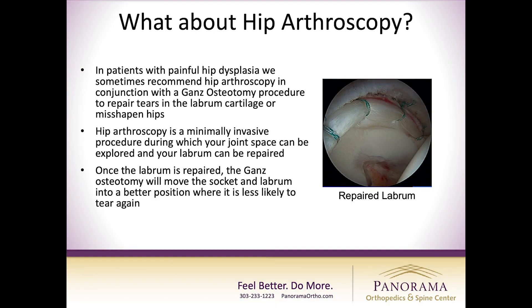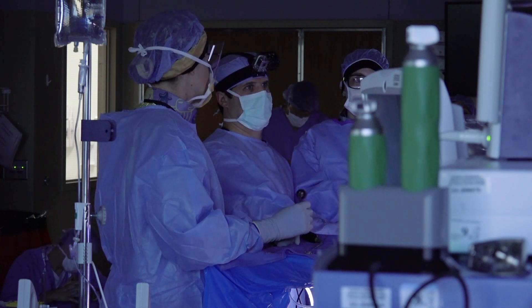When we see a patient with hip dysplasia and a labral tear, we generally recommend a two-part surgery. The first part is to fix the labrum, because that's the initial source of pain, and it is achieved with an operation called hip arthroscopy — a series of two or three small incisions. My partner Dr. Mike Ellman, who is an expert at this type of surgery, goes into the joint.